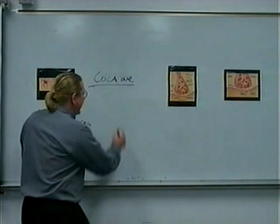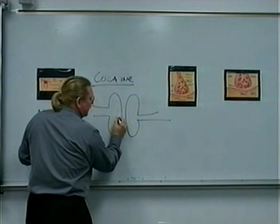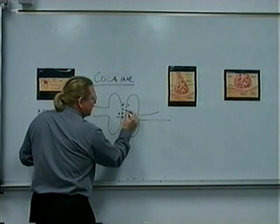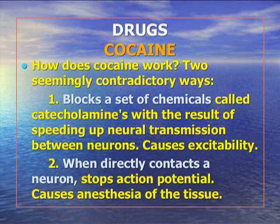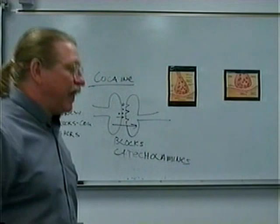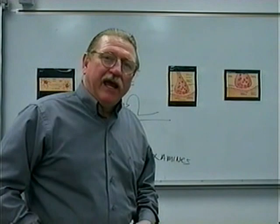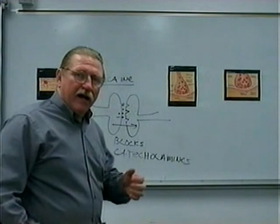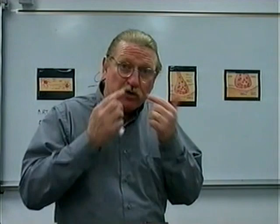How does cocaine work? It works at two different levels. Cocaine blocks a set of chemicals called catecholamines, and in effect speeds up transmission from one neuron to the other — so people move faster, feel like ideas are flowing, and again feel euphoria. But it also does something interesting: it happens to be the drug of choice for operations on the nose and eyes. When they did my septum operation, they packed my nose membranes with cocaine.